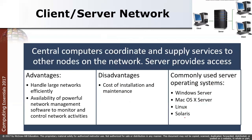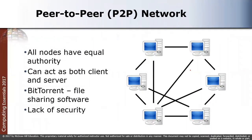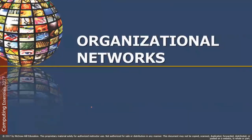In a peer-to-peer network, all nodes have equal authority and can act as both client and server — there is no dedicated central server. BitTorrent is an example of peer-to-peer, which is a file-sharing software. The disadvantage of peer-to-peer is the lack of security — you don't know which PC may have been infected by a virus.